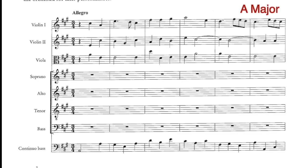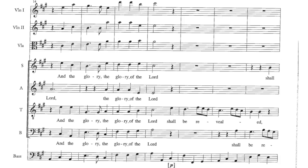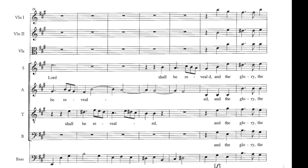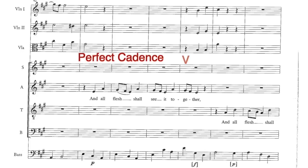The tonality of A major is clear right from the beginning. The introduction then ends with a suspension and a perfect cadence. The piece modulates to the dominant, which is E major, and this section ends with a perfect cadence in E major. We then immediately move back to A major, which is confirmed by a perfect cadence in A major at bars 46 and 47.